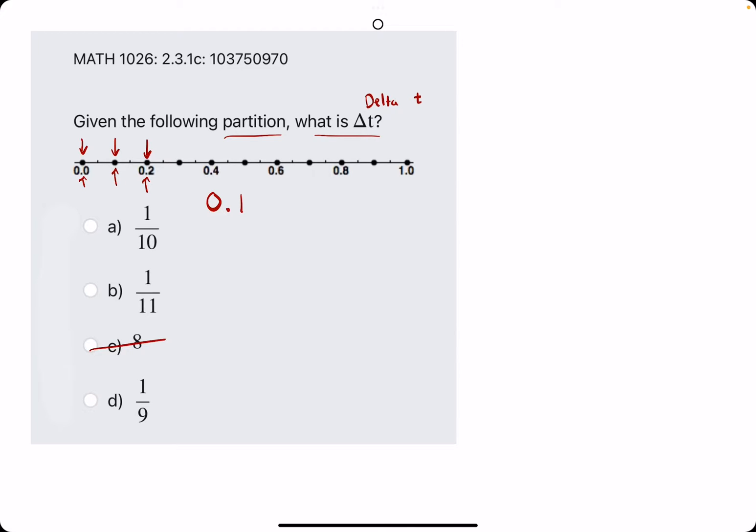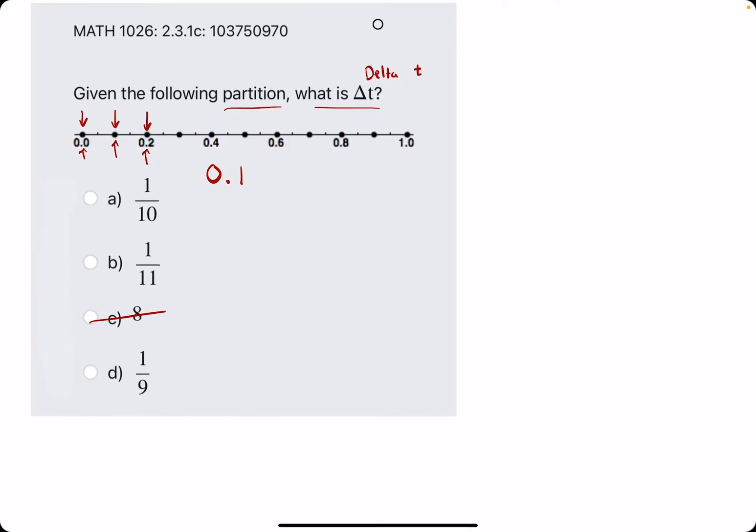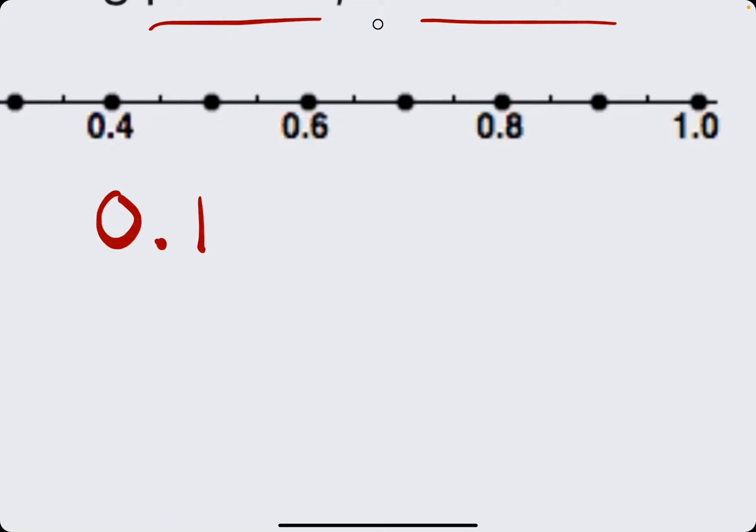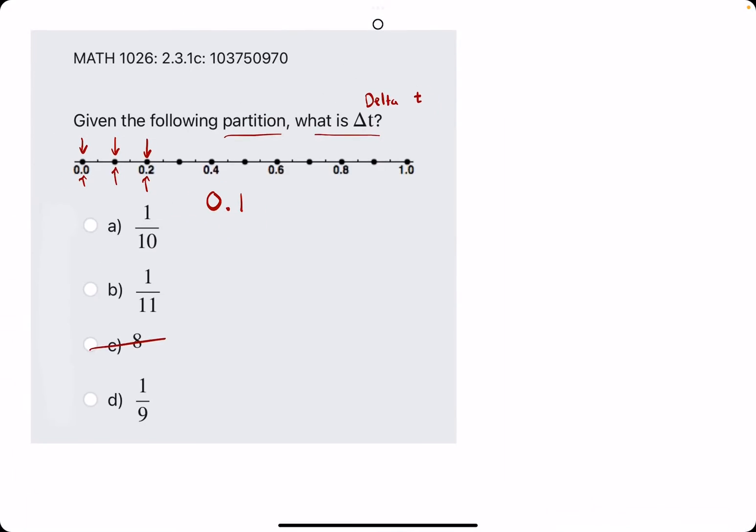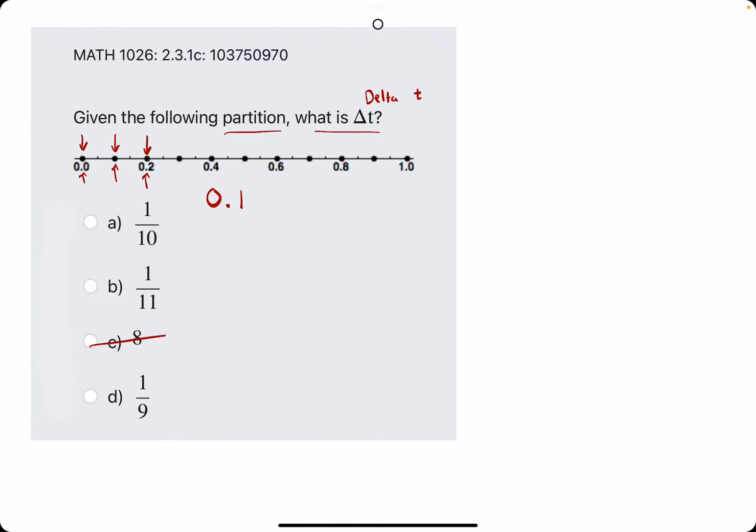It's kind of close, all these are relatively close in value, but if we think about point one, another word for point one is one tenth. So break out the eraser to see that a is our answer.